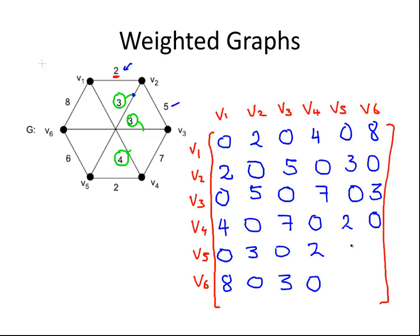Now V5. It's not connected to V1. It is connected to V2 with a weighting of 3. It's not connected to V3. It is connected to V4 with a weighting of 2. It's not connected to itself, so we're going to put in a 0 here. And finally, it's connected to V6 with a weighting of 6. And again, we'll put in 6 here.